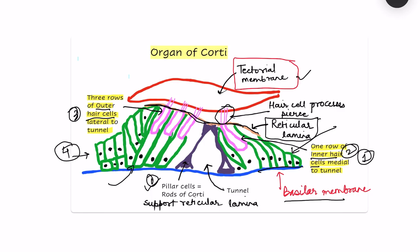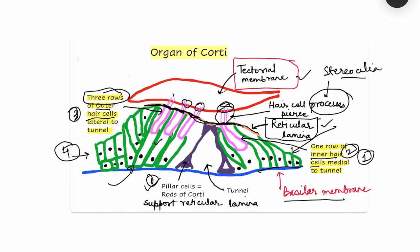If the cochlea extends longitudinally, this row of inner hair cells extends transversely throughout. There are also three rows of outer hair cells. The hair cells have processes known as stereocilia. These stereocilia pierce through the reticular lamina — they are fixed in the reticular lamina.